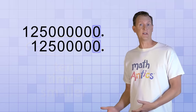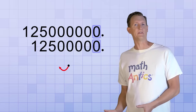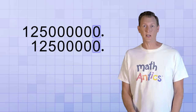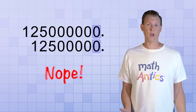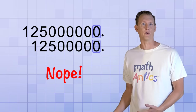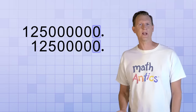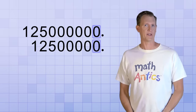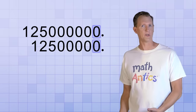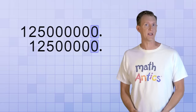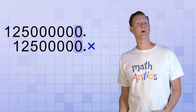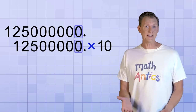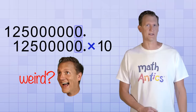And if we line up the ones place of our new number with the ones place of the original number, you see that the new number is 10 times smaller. That means shifting the decimal point one place to the left is equivalent to dividing a number by 10. But do we want a number that's 10 times smaller than before? No! We don't want to change the value of the number at all — we just want to write it in a different way. Since shifting the decimal resulted in a number that's 10 times smaller than before, to compensate and keep the value the same, we need to multiply the new number by 10. Making the number smaller and then compensating for that might seem like a weird thing to do, but it'll make more sense in a minute.